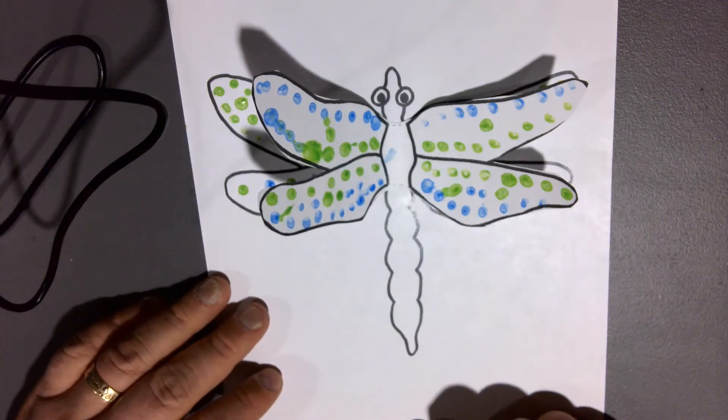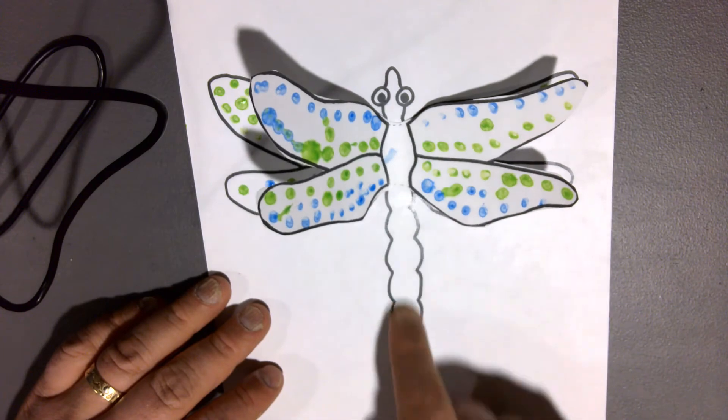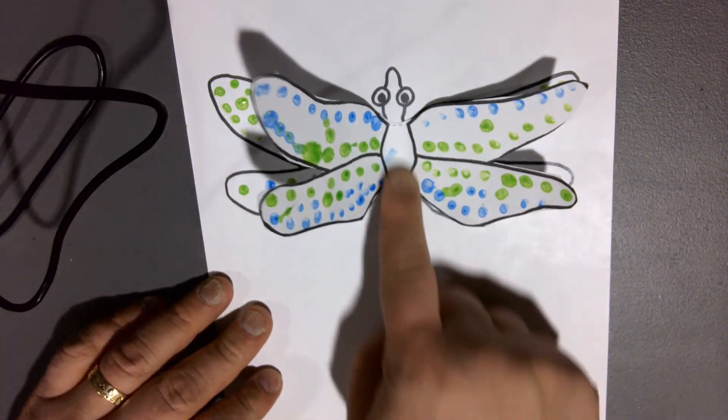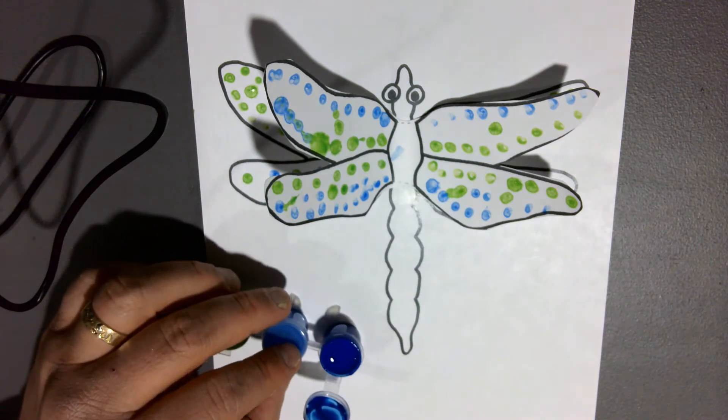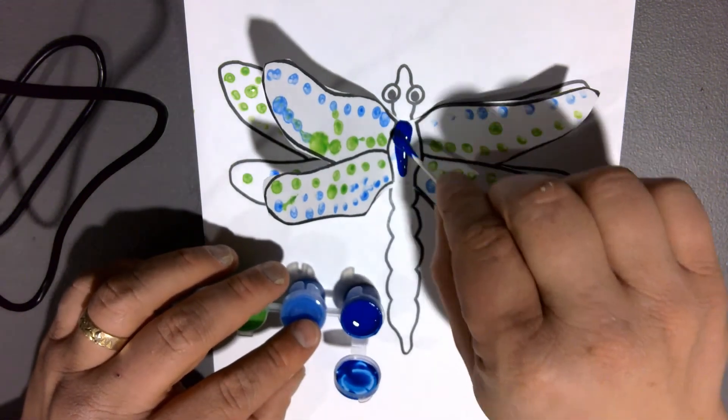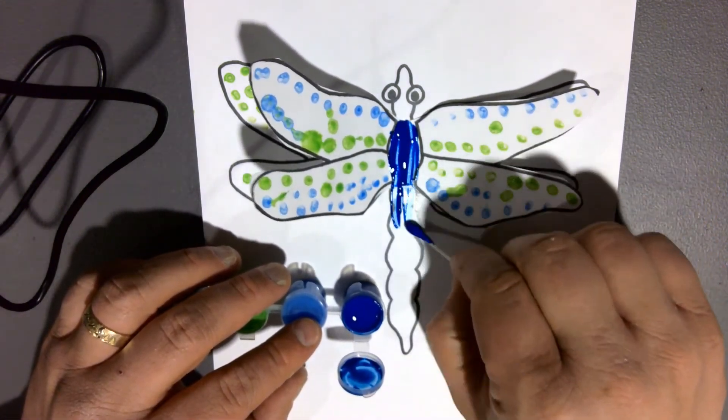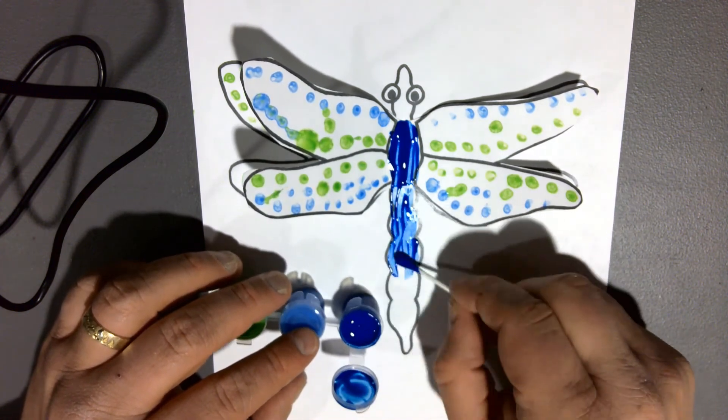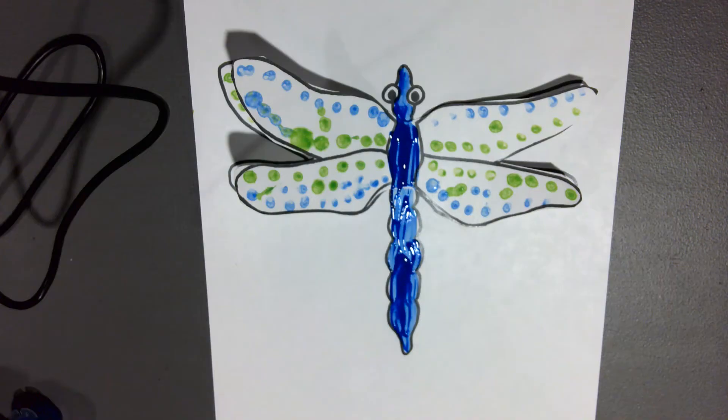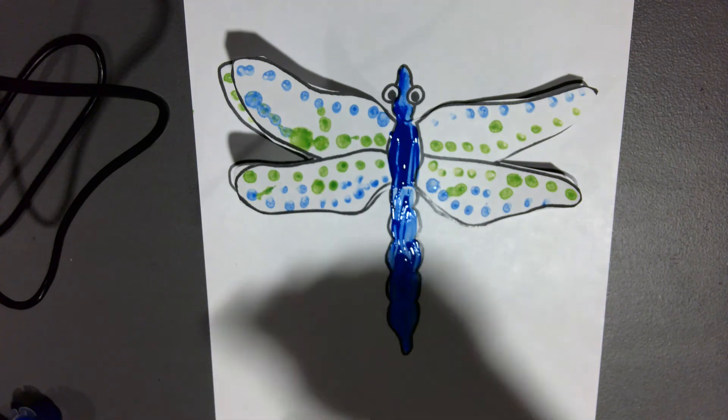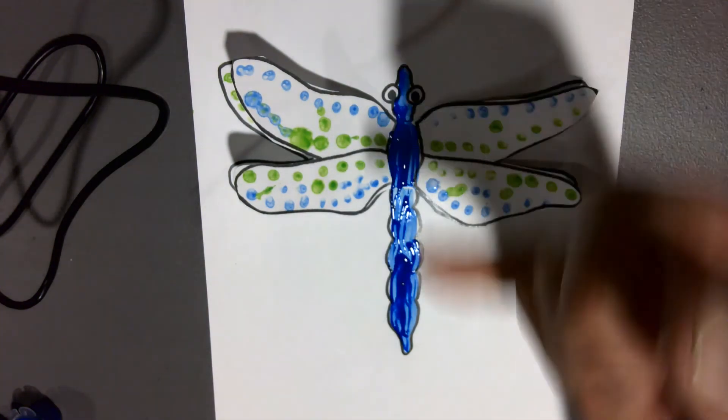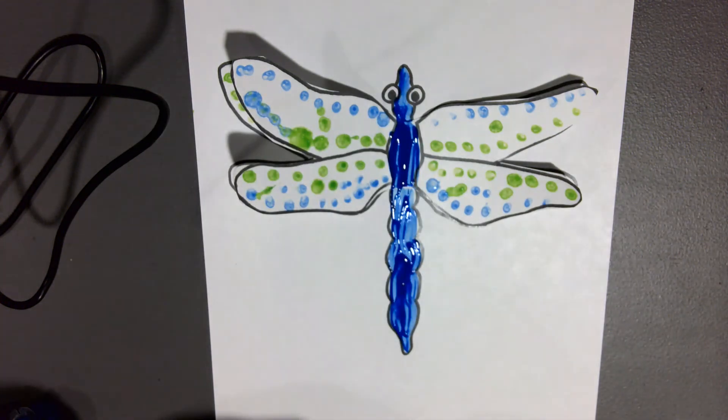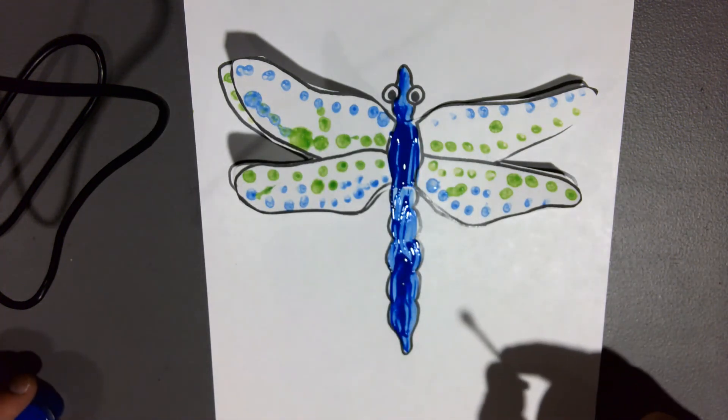Once you have your dragonfly together, go ahead and either paint or color in the rest of the body. Go ahead and let it dry. And if you want to, you can add some googly eyes to the front of your dragonfly, cut it out, and zoom around the house with it. I hope you had fun making this kid's craft.